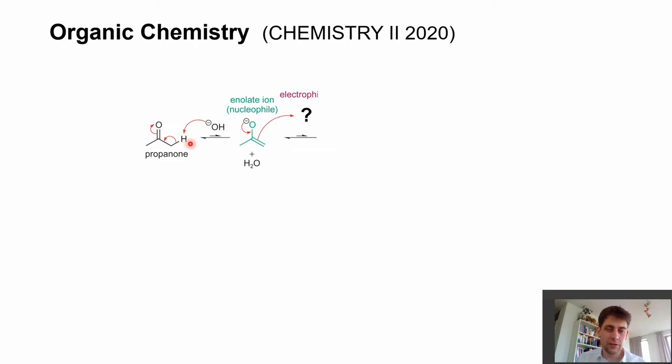The aldol condensation starts with a carbonyl component again. We're having our propanone, or acetone. Acetone gets deprotonated at the alpha position by a base—we've seen that before—and then we're forming this enolate ion.